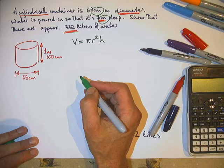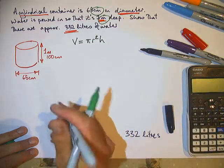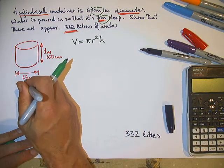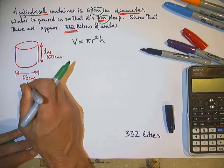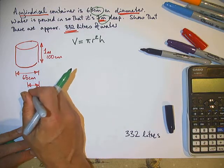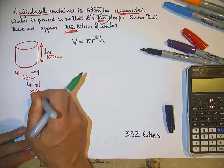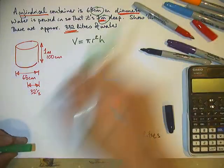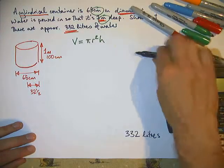So 65 centimetres is a diameter. The radius is half that. So that's 32 and a half. So what values are we going to put here?